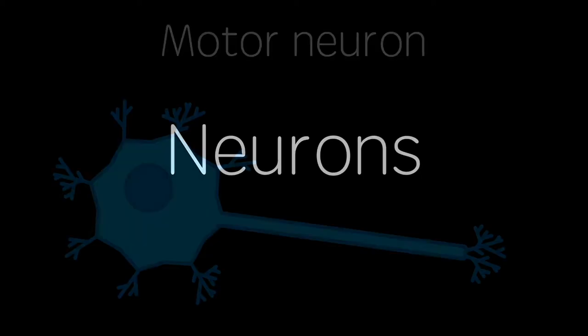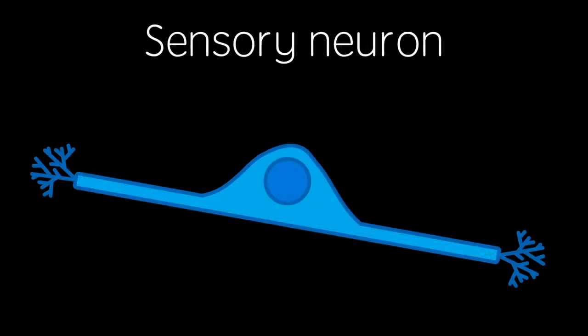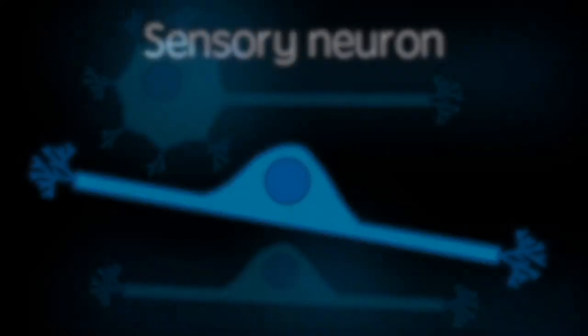This video will give a short and simple introduction to the primary cells of the nervous system: neurons. The main classes of neuron include motor neurons, which are multipolar, and sensory neurons, which are bipolar. Although they look quite different,